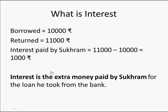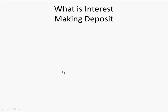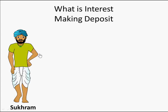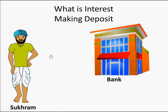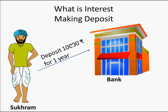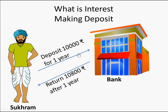Now let's take the reverse case — making a deposit. Sukram had a good crop this year, so he decided to put his surplus money into the bank. He goes to the bank and tells the branch manager, 'I am going to do a fixed deposit of 10,000 rupees for a period of one year. I have this 10,000 rupees extra — what can you give me back after one year?' The bank manager says, 'I'm going to use this 10,000 rupees to give loans to other people, and I will return you 10,800 rupees after one year.'